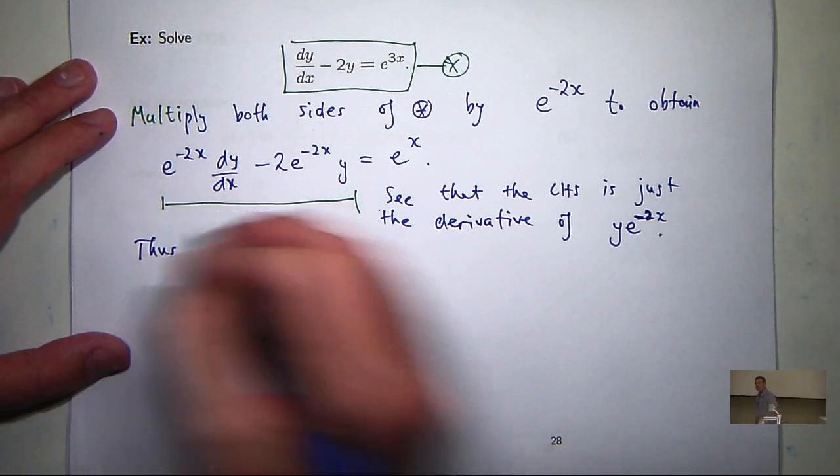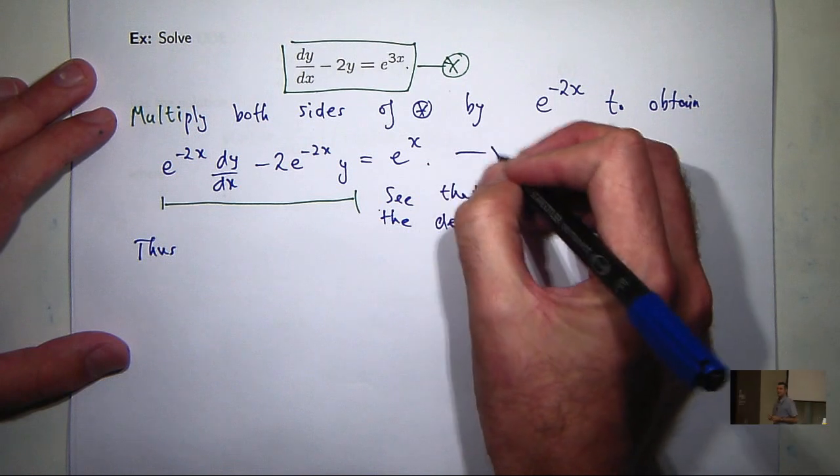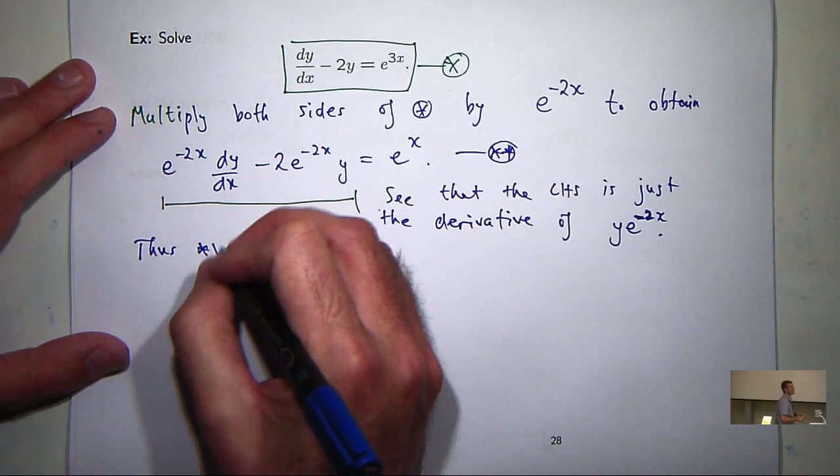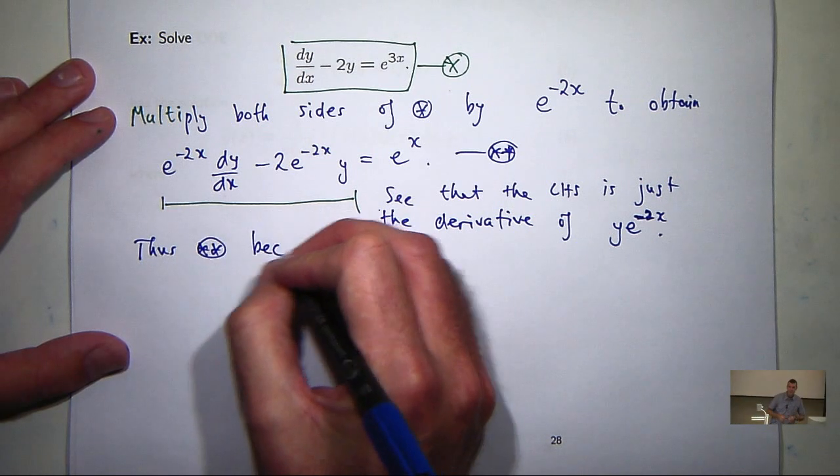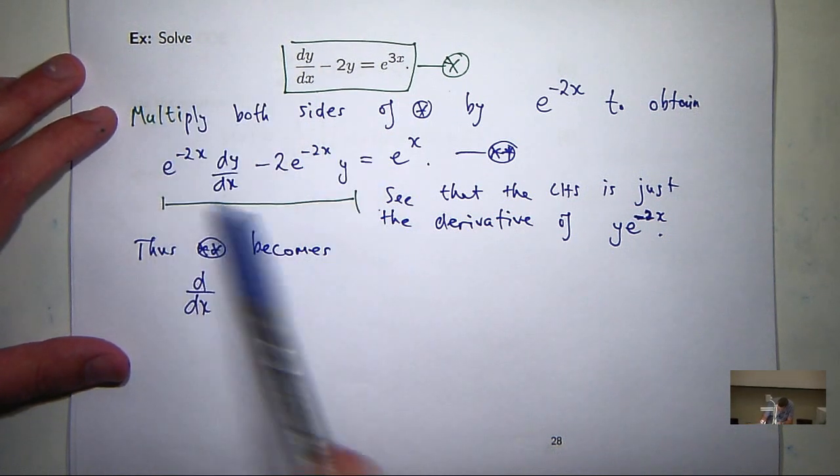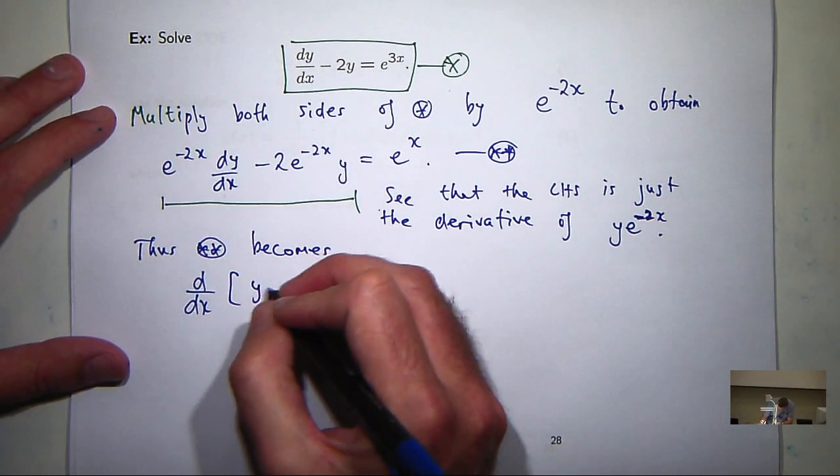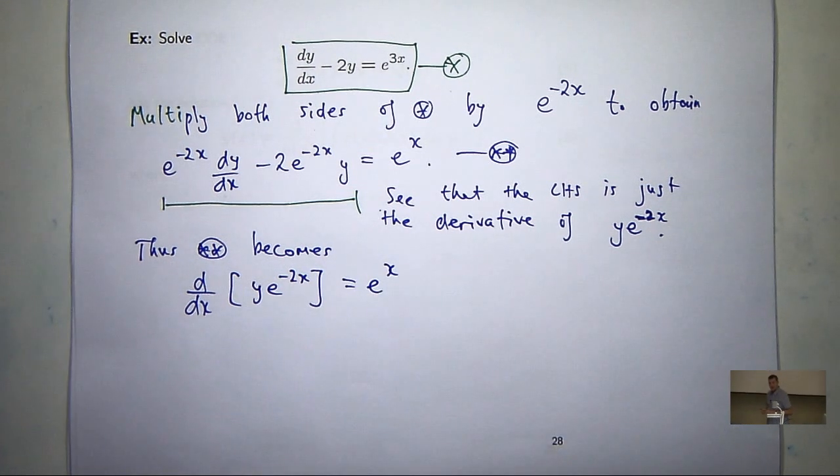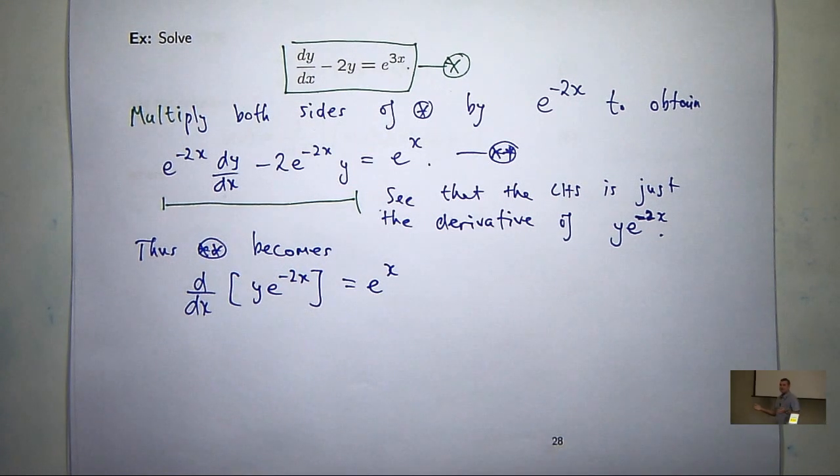So let's call this a double star. So now I am collapsing that whole left-hand side down to the derivative of a special product. Okay, so you can easily verify it just by using the product rule.